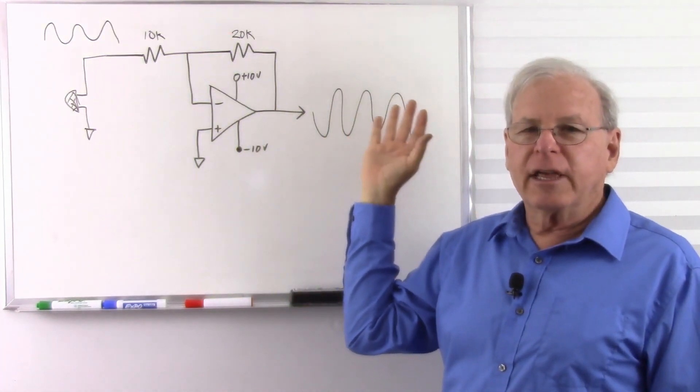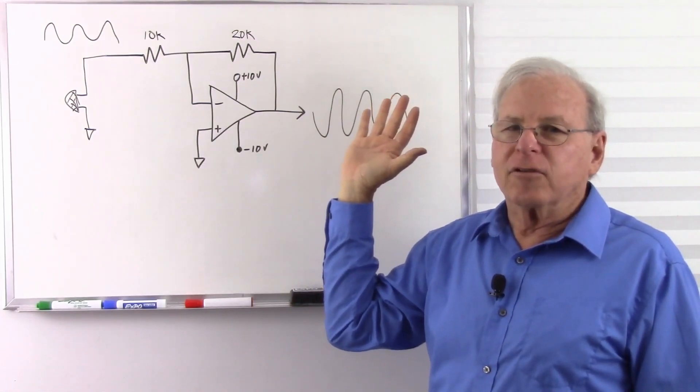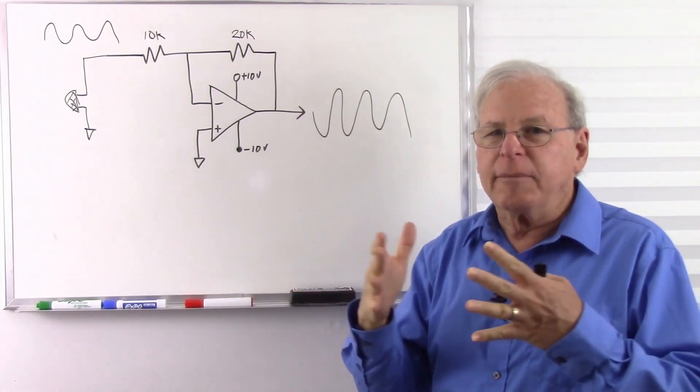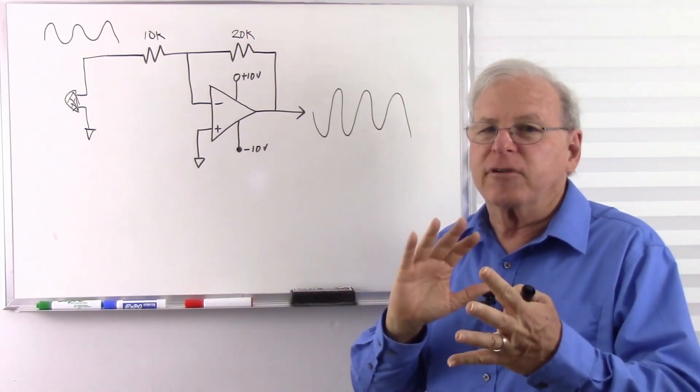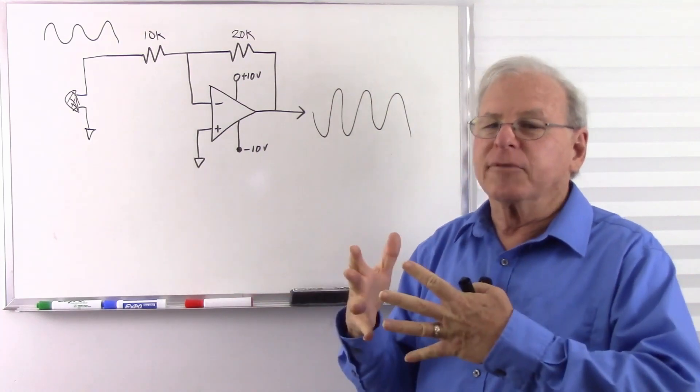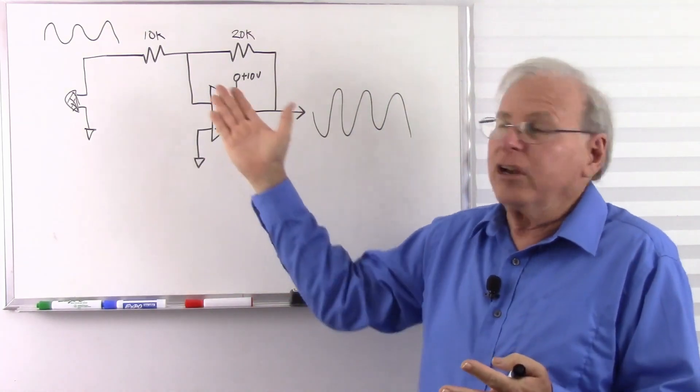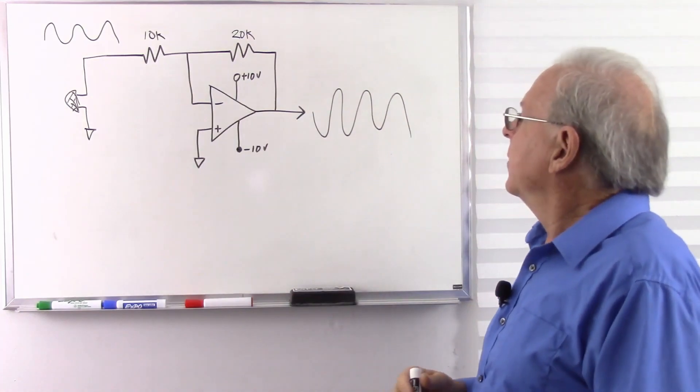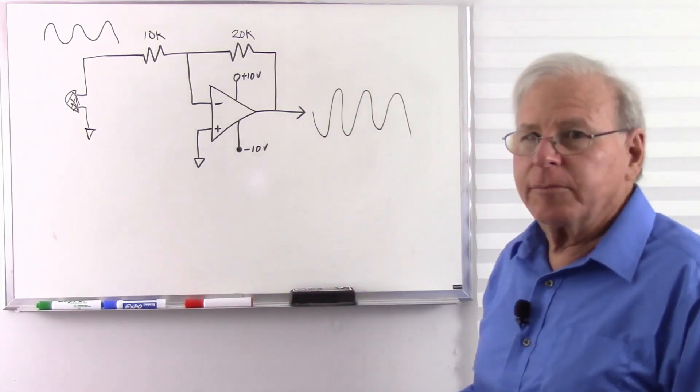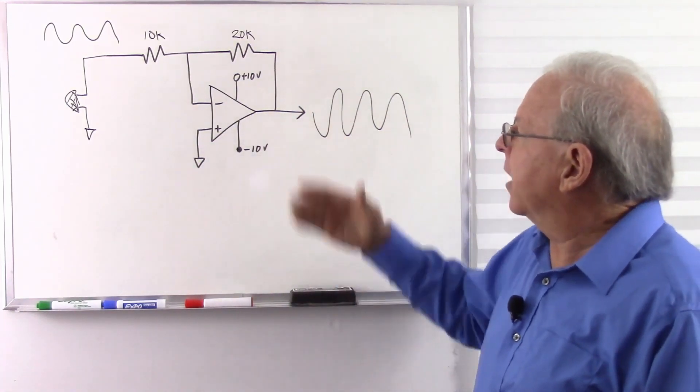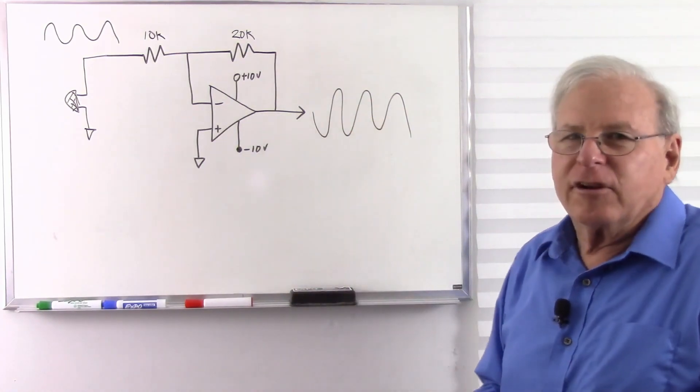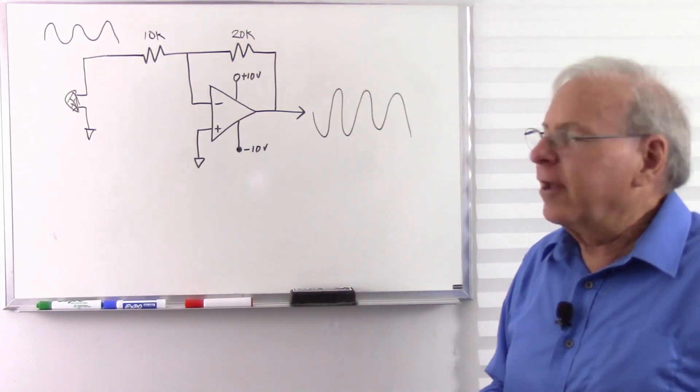The fact that it inverts doesn't really matter. The next stage is probably going to invert it again, no matter what you're doing. As long as you're not having multiple signals coming together where they might get out of phase, if you just have one signal, then it really doesn't matter. It's just a very simple amplifier to make, and there's a practical use for the inverting amplifier, but the fact that it's inverting doesn't really matter.